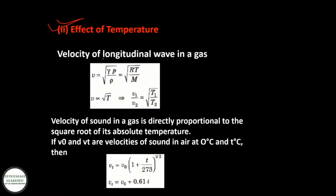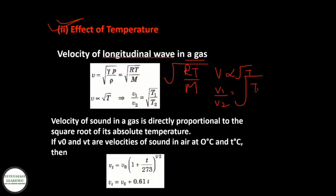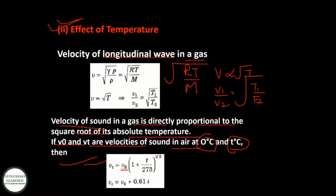Second, effect of temperature: velocity of longitudinal waves in a gas is V = √(γP/ρ) = √(RT/M). Here V is directly proportional to √T, so V1/V2 = √(T1/T2). Velocity of sound in a gas is directly proportional to the square root of its absolute temperature. If V0 and Vt are velocities of sound in air at 0°C and t°C, then Vt = V0(1 + t/273)^(1/2), or approximately Vt = V0 + 0.61t.